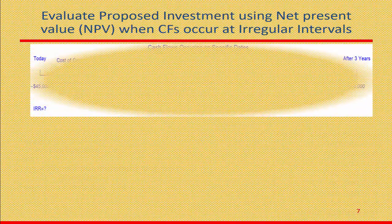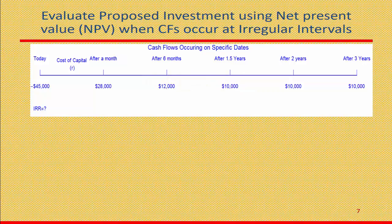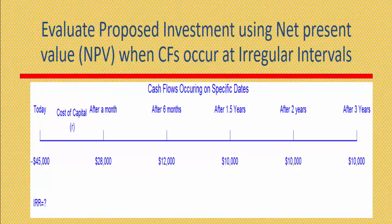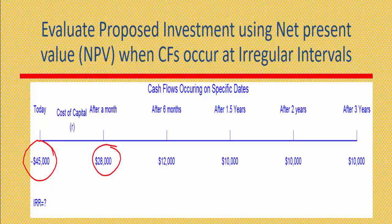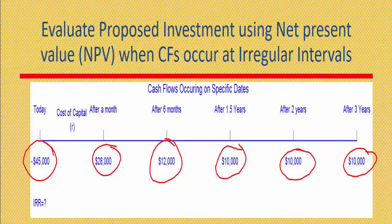Next, I want to make this example more realistic. In this version, the cash flows come at different times and the time intervals are not equal. For example, you invest $45,000 at the beginning of the period, and you get $28,000 after one month, $12,000 after 6 months, $10,000 after 1.5 years, $10,000 after 2 years, and $10,000 after 3 years. Since the time intervals are unequal, how do you solve this kind of problem?